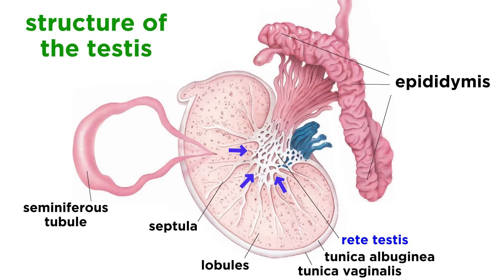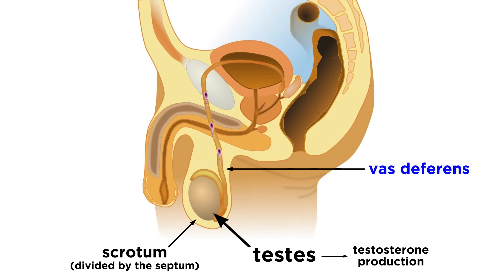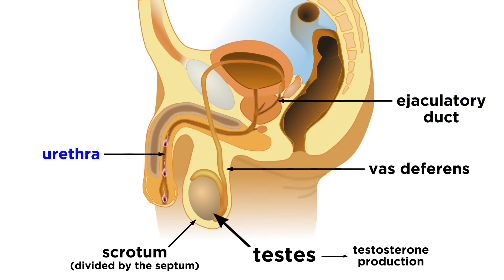These tubules converge to form a straight tubule that leads to the rete testis. From here, sperm will then move through a system of ducts, starting with the epididymis, where they are stored until ejaculation during a sexual act. When this happens, sperm cells move through the vas deferens, the ejaculatory duct, and eventually into the urethra, just like urine at the end of the urinary system. In doing so, it leaves the penis, which is a copulatory organ whose purpose is to deliver sperm into the female reproductive tract, and together with the scrotum, these make up the external genitalia of a male.